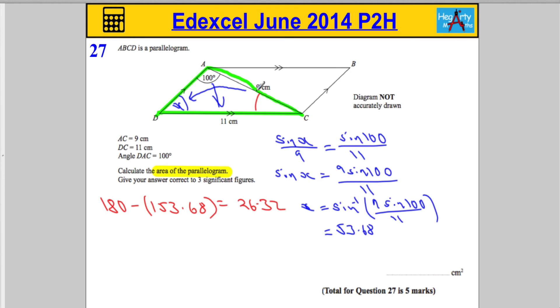Lovely. Okay, so we know this is 26.32, and the area of this triangle here would be half AB sine C. So, the area of the triangle would be half AB sine C, which is on the front of the paper. But this triangle and this triangle are identical, which actually means that the area of the whole shape is not going to be half AB sine C. It's simply going to be AB sine C.